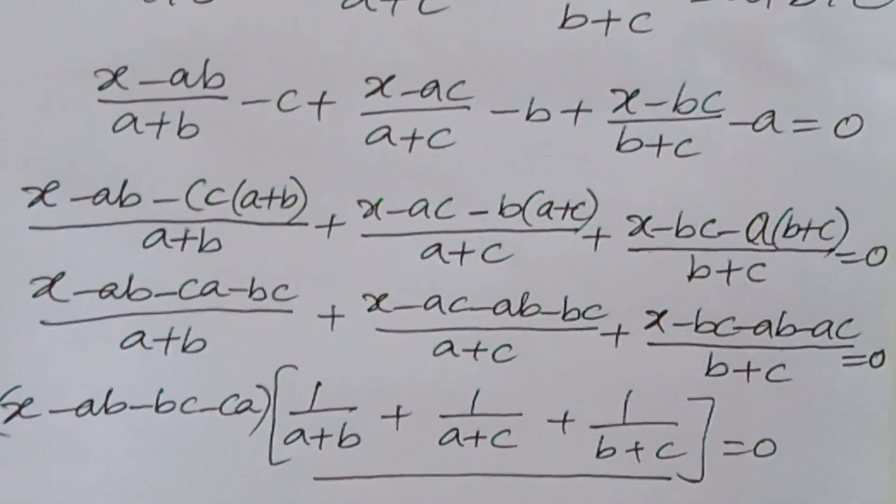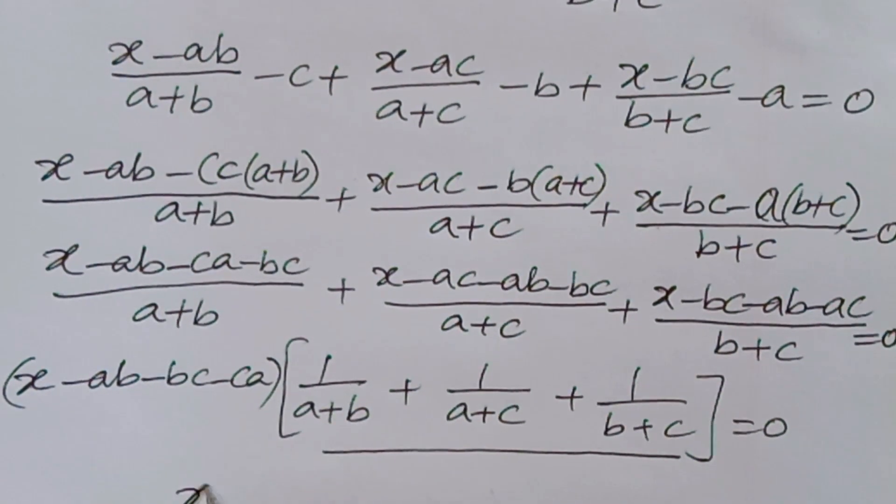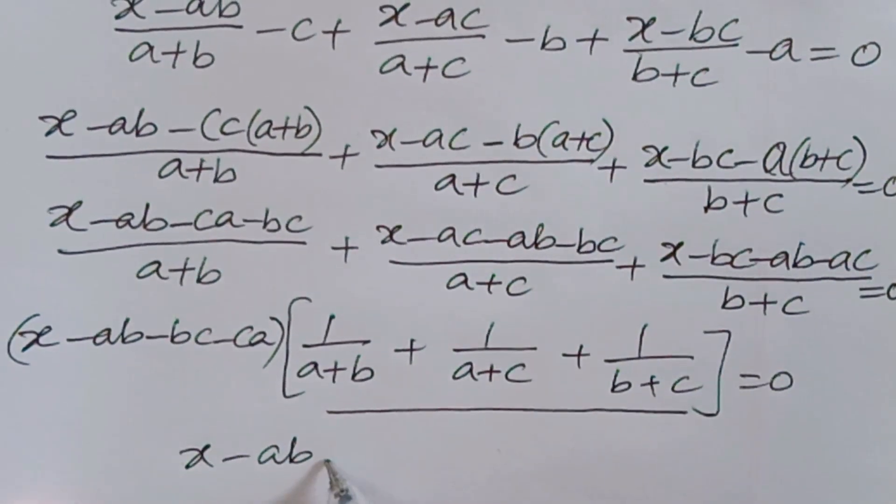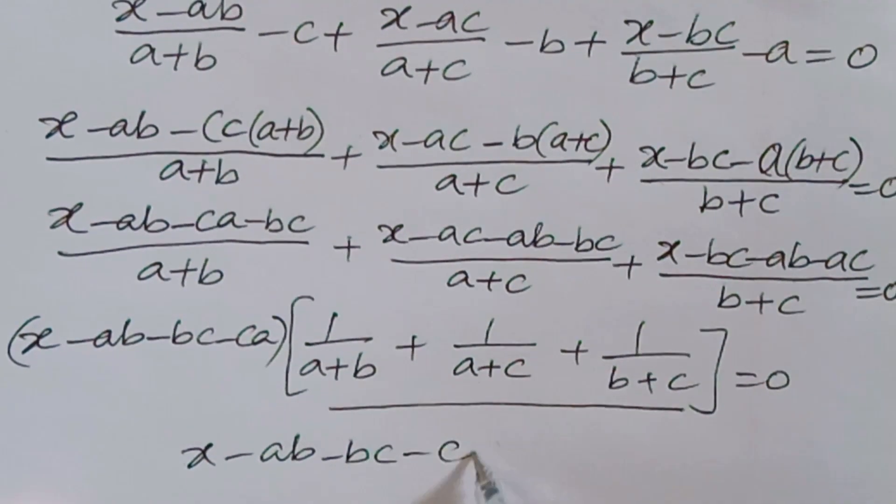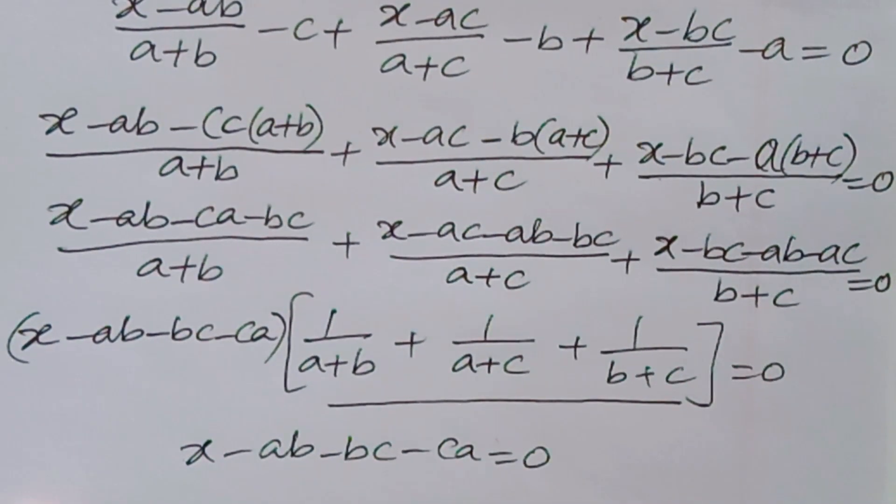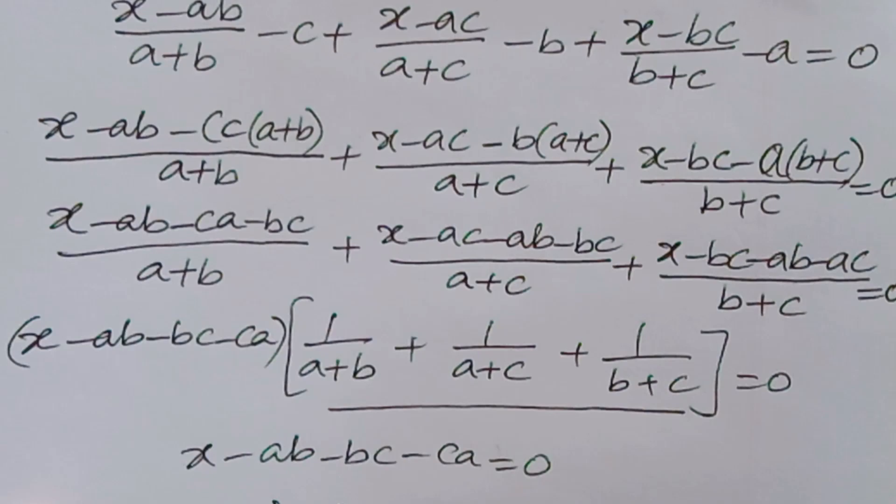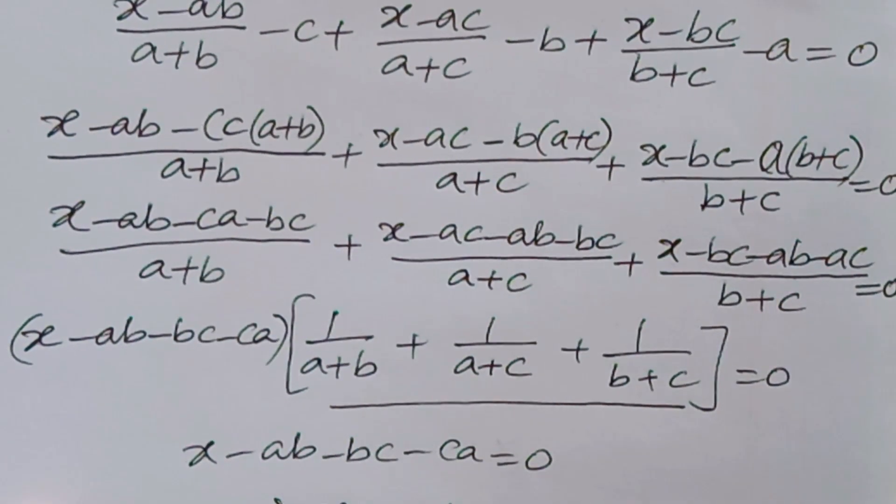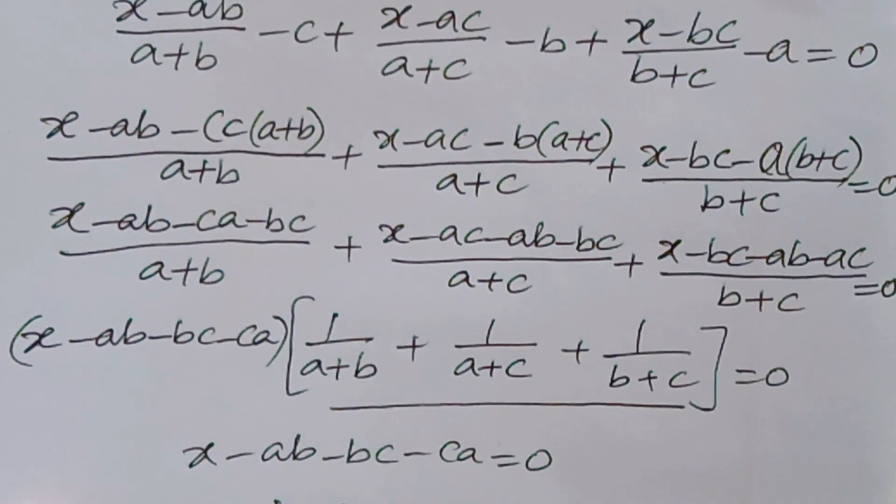So here, x - ab - bc - ca = 0. That implies x = ab + bc + ca.